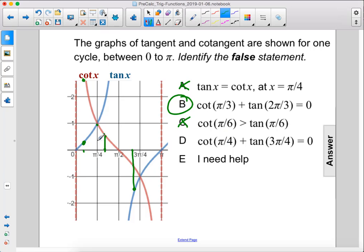Cotangent of π/4 is right there, it's 1, plus tangent of 3π/4, which is negative 1. When you add those together, that is 0.